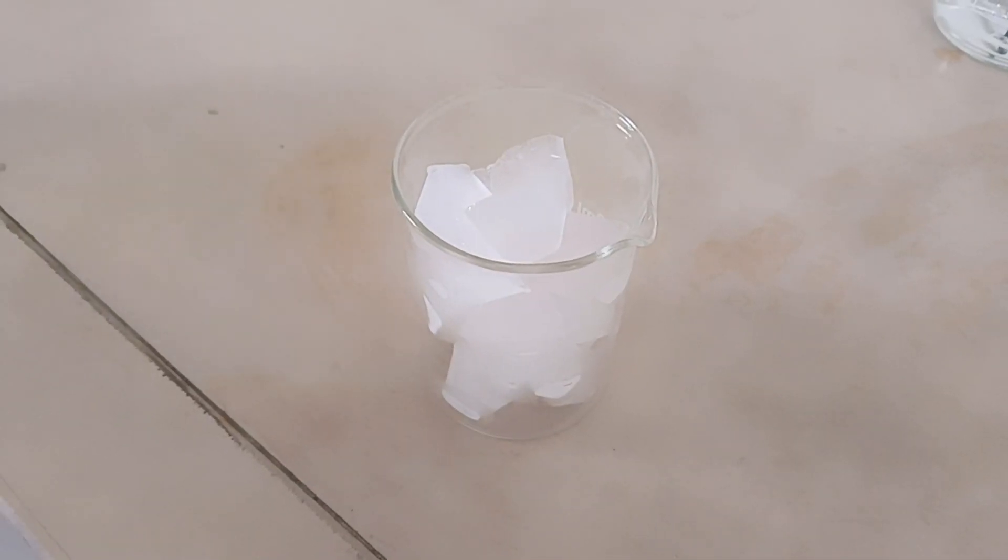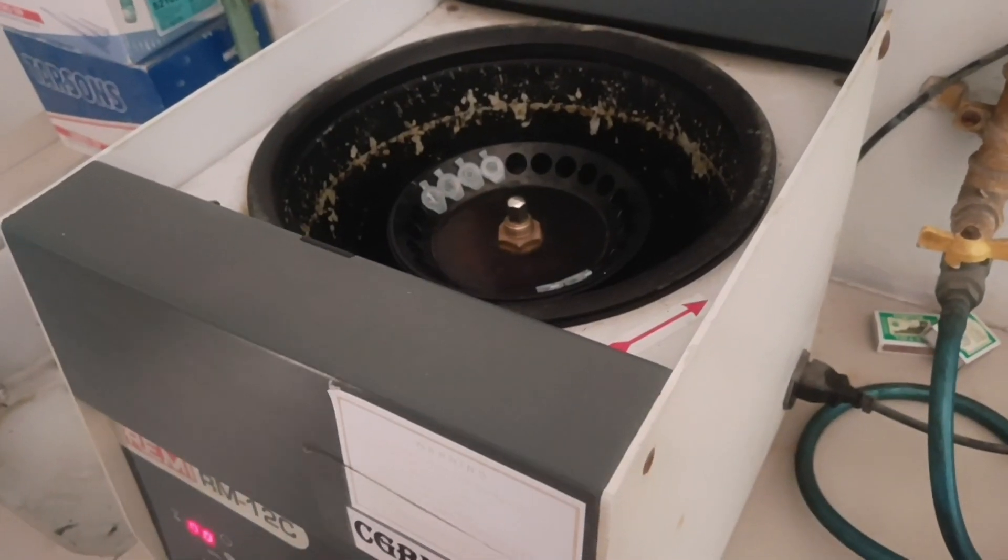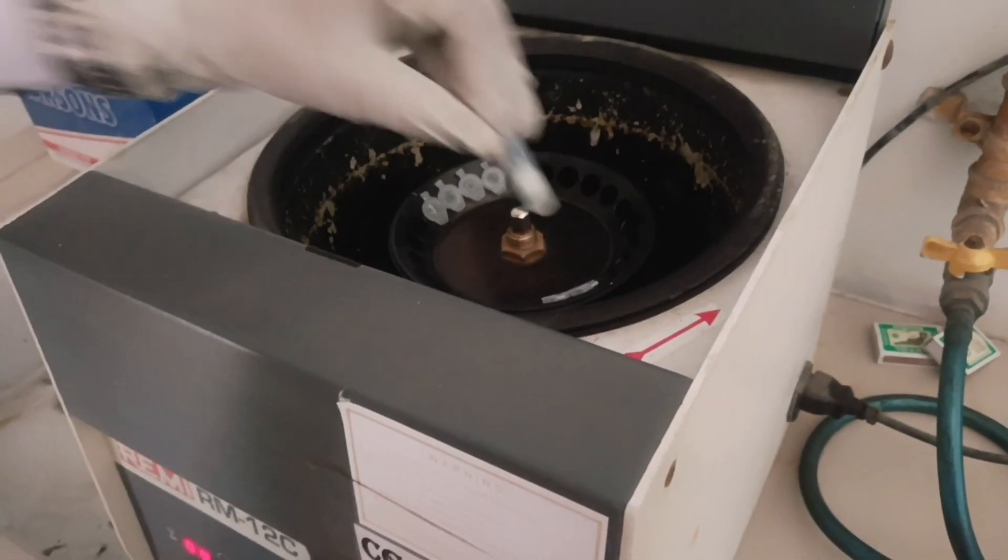Keep all the tubes on ice for 15 to 20 minutes. Centrifuge all the tubes at 10,000 rpm for 10 minutes.